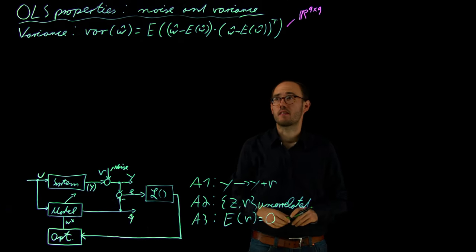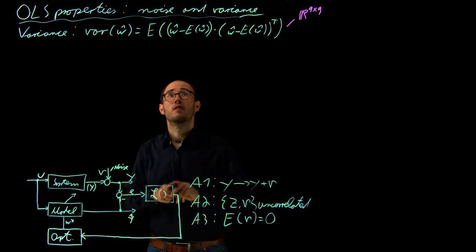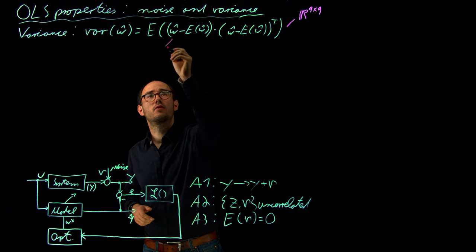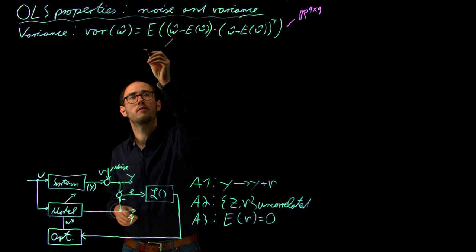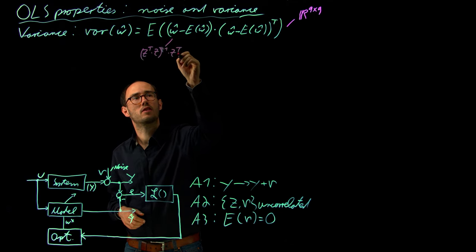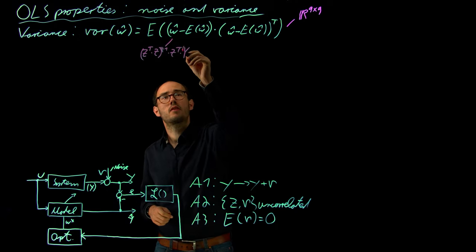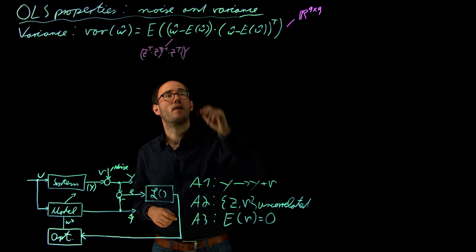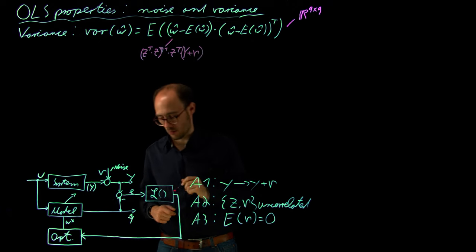Let's investigate the variance more closely by inserting what we already know. w_hat is just the solution from the OLS approach identified previously, which is (Z^T Z)^{-1} Z^T y. And as we also consider our noise, we need to add the noise term here as well.